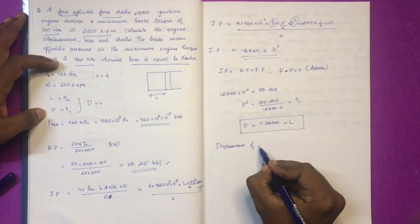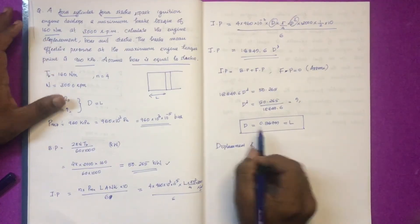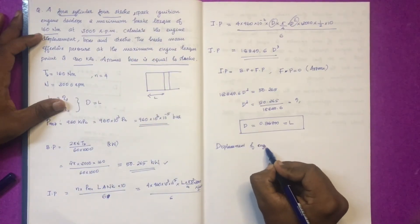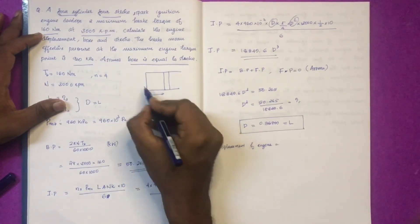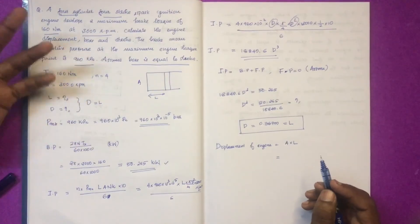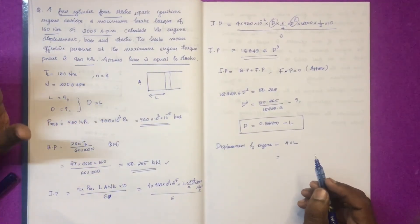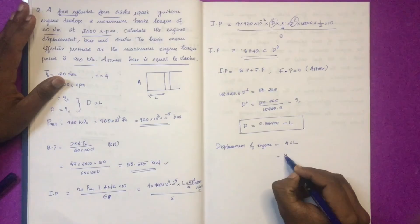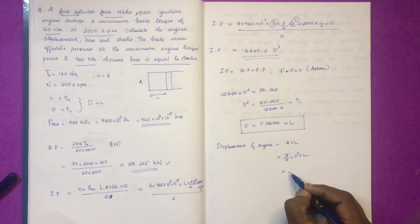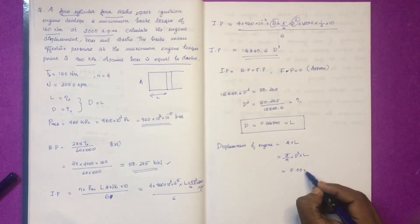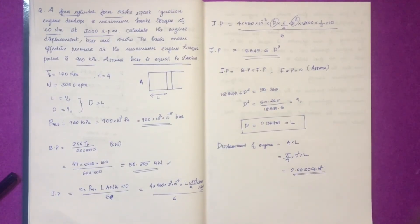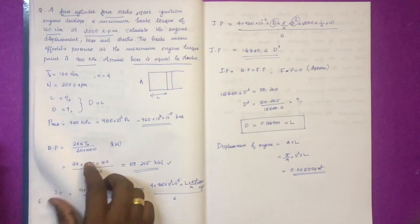We have displacement. The piston displacement is the total volume inside the cylinder when the piston is displaced. If the area is π/4 × D² into L, substituting the value of D, the displacement is 0.002095 m². Now we are going to discuss the indicated power.